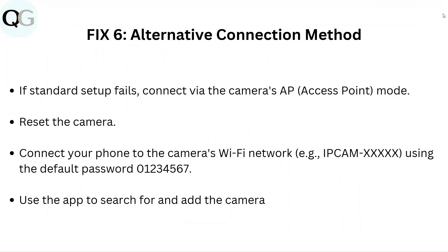Fix 6: Alternative connection method. If standard setup fails, connect via the camera's access point mode. Reset the camera, then connect your phone to the camera's Wi-Fi network — IPCAM followed by XXXXXX — using the default password 01234567. Then use the app to search for and add the camera.